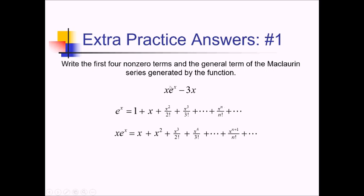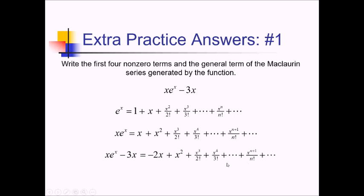Next, we do all of this minus 3x, essentially just subtracting 3x. So x minus 3x gives a negative 2x at the beginning. That's just about all that changes — the rest stays exactly the same: we still have x squared, x cubed over 2 factorial, and all the rest pretty much unchanged. So there is our Maclaurin series.